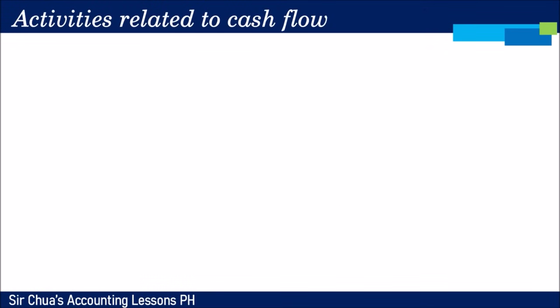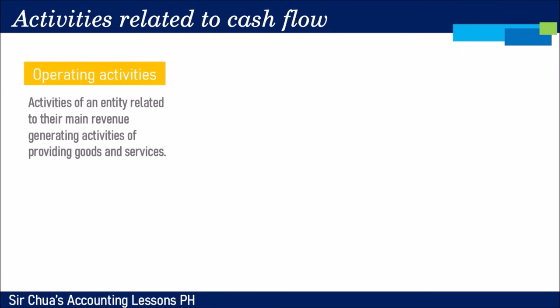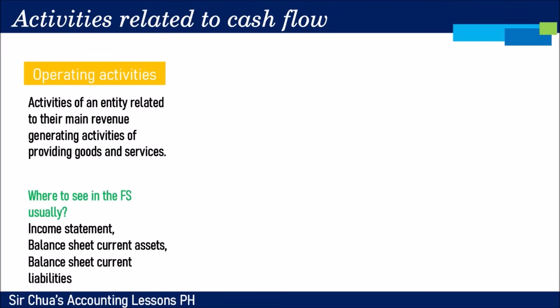The preparation of the statement of cash flows reports three major activities. The first is operating activities — activities of an entity related to their main revenue-generating activities of providing goods and services. These are usually seen in the income statement, since operating activities relate to where we earn income and what we spend. They also appear in the current asset and current liability sections of the statement of financial position.